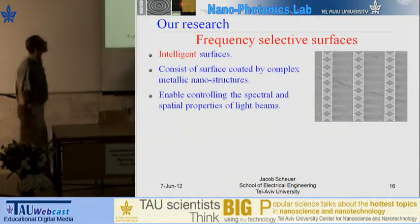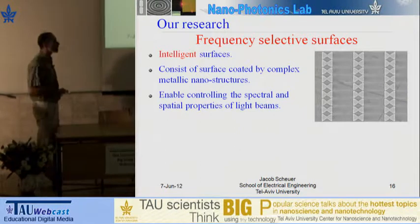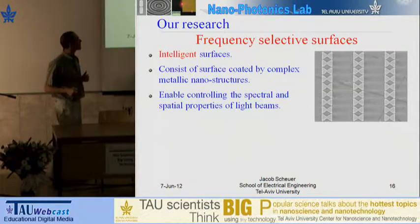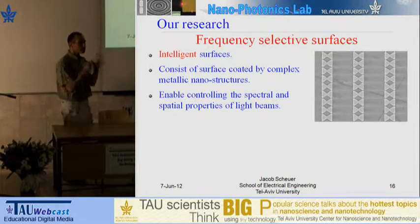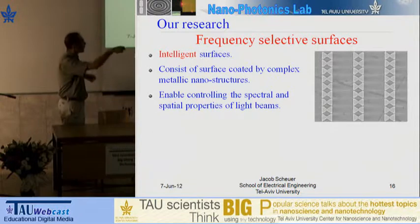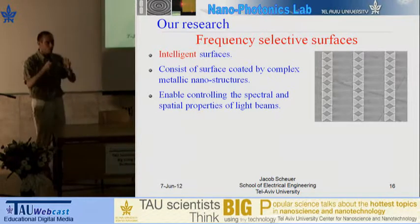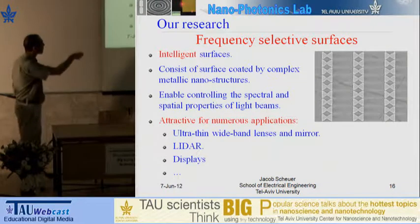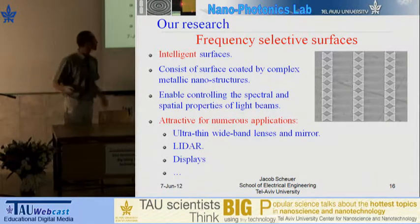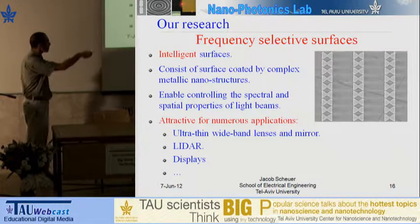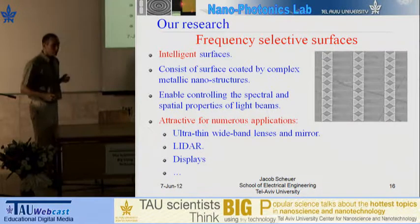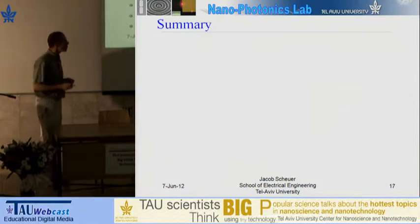The other application is what we call a frequency-selective surface — what I call intelligent surfaces. They consist of generally transparent surfaces coated with complex metallic structures. These structures allow us to control and manipulate the shape and frequency of the beam which hits this interface, and basically allow us to fold and mold light in any way we want. Applications include ultra-thin and ultra-light wideband lenses and mirrors, laser radars, and computer or TV displays, which are becoming a huge market.